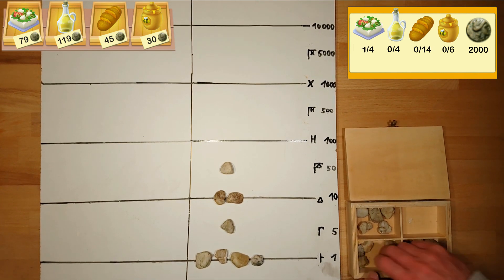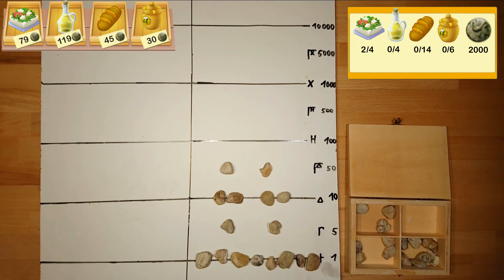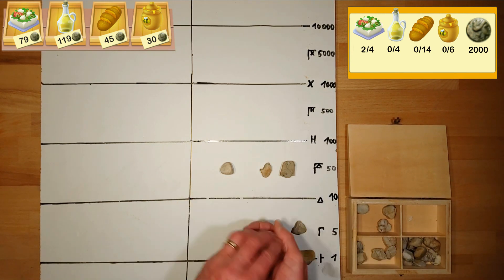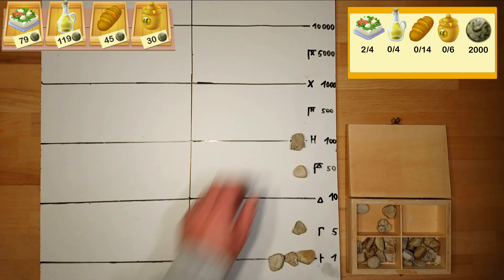Now we add the second feta cheese. We simply multiply each pebble by two. Afterwards we have to sum up and simplify the number representation. Okay, two feta cheese cost 158 coins together.